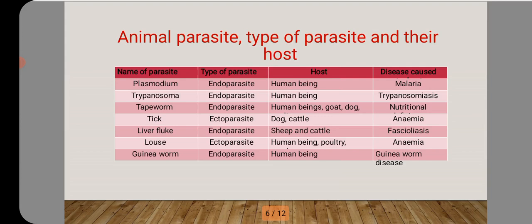The second parasite is trypanosoma. Its type is endoparasite, the host is human beings, and the disease it causes is trypanosomiasis. The next is the tapeworm, also an endoparasite found in the intestines. Hosts are human beings, goats, and dogs. The disease caused is nutritional deficiency or teniasis.